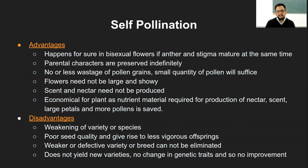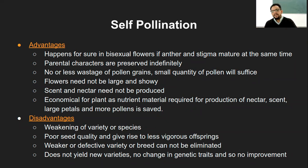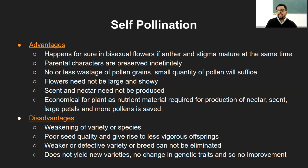In self-pollination, when the anther and stigma mature at the same time in a bisexual flower, pollination can occur. One major advantage is that parental characters — such as flower color, seed shape, color of the pod, and leaf length — are preserved indefinitely, passing from one generation to the next.